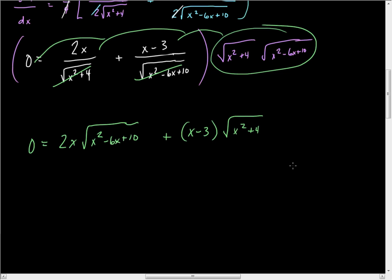The best way to do this, I would think, would be to graph these and to see where they lie. This is going to be probably quite nasty. To solve this, I would have to subtract and get one on one side. So I'm going to move this one over. I get negative two X root X squared minus six X plus ten is equal to X minus three times root X squared plus four. And now I square both sides.